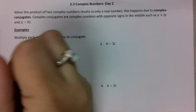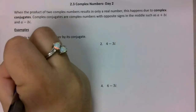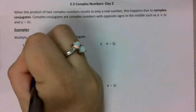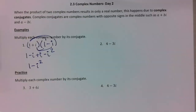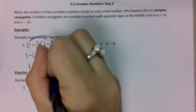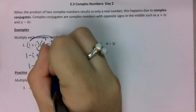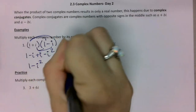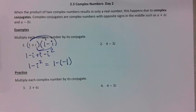Combining like terms, the i's cancel out, so I'm left with 1 minus i squared. I can't leave i squared, so I want to replace that with negative 1 — but negative 1 times negative makes it a positive.